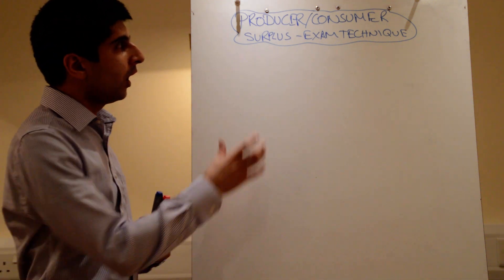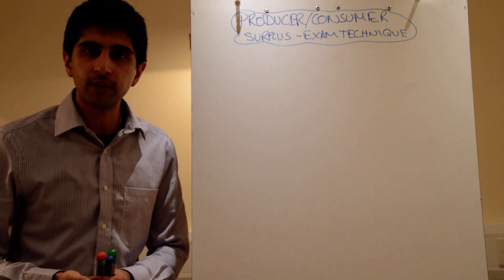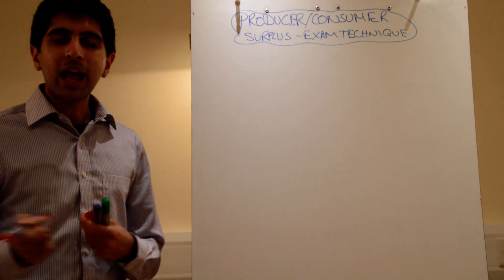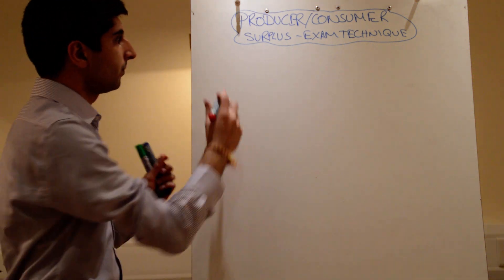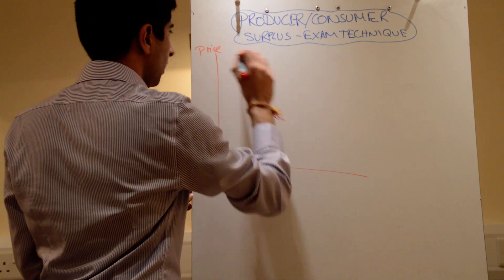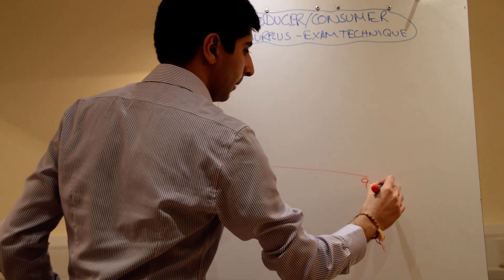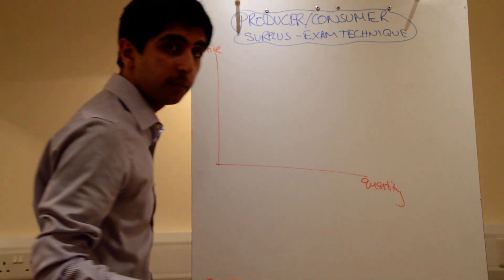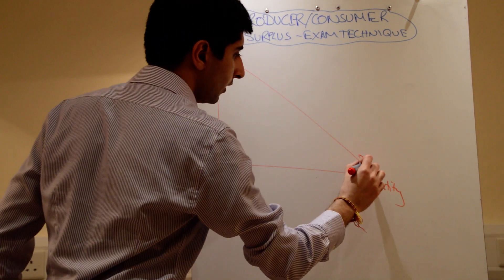A common question might be: what happens to consumer surplus when the price increases? How would you actually answer that question? Well, you need to show it on a diagram. So you'd have price and quantity. And because we're working with consumer surplus, you would just draw a demand curve.